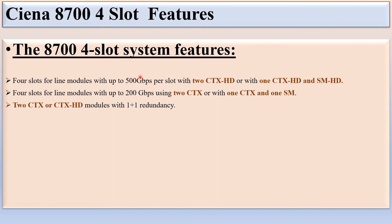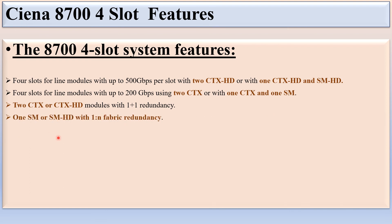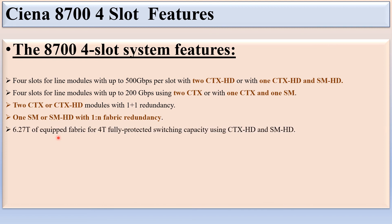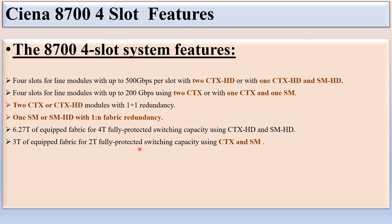If you use 1x CTX-HD and 1x SM-HD you can achieve up to 500 Gbps line module speed. If you use CTX instead of CTX-HD and SM instead of SM-HD, you can achieve up to 200 Gbps. There are 2x CTX-HD modules with 1+1 redundancy and 1x SM or SM-HD with 1:N fabric redundancy. The equipped fabric capacity is 6.27 TB for 4T fully protected switching using CTX-HD and SM-HD, or 3 TB for 2T fully protected switching using CTX-HD and SM.